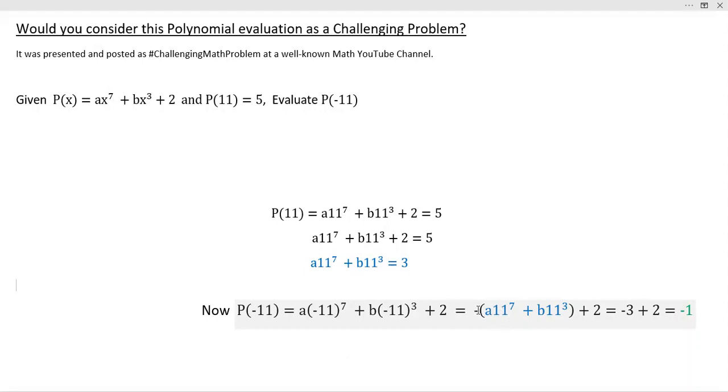All right. The minus sign out front there. Now, notice in the previous step, we did determine that this value A times 11 to the seventh plus B times 11 cubed is actually equal to three.